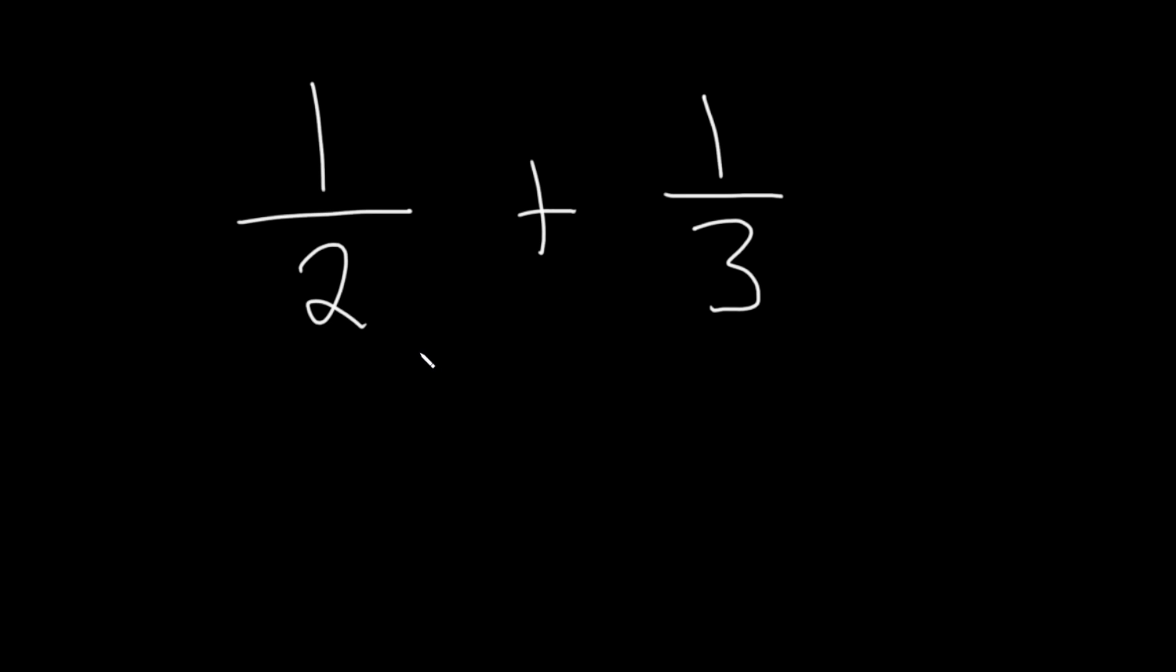So in order to do this, we need to make sure that we have the same denominator. The denominator is the number that's on the bottom. So here there's a 2 and here's a 3. So you want what's called a common denominator. In this case, that number is going to be 6.